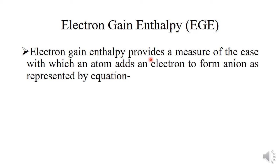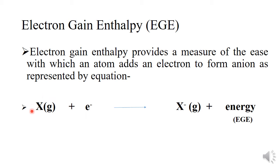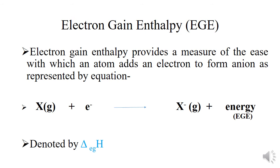Electron gain enthalpy provides a measure of the ease with which an atom adds an electron to form an ion, as represented by the equation. Suppose this is a neutral, isolated, gaseous X atom and an electron is to be added to it. After the addition, it gets converted into the X⁻ negative ion, and some energy is released — which is known as electron gain enthalpy, denoted by the symbol ΔEgH, where EG means electron gain and H is enthalpy.